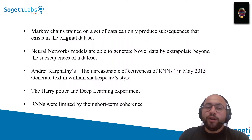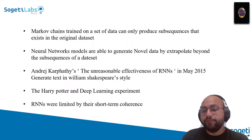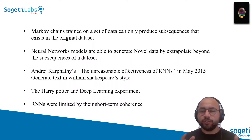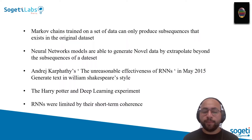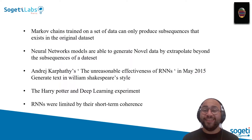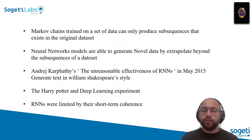But there is a problem with RNNs: they are limited by short-term coherence, which means the memory is short. Imagine a long sequence — a Mozart composition considered in four parts: the first part is happy, the second is a solo, the third is a melody, the fourth is sad. When the model is learning the melody part, it has already forgotten the first happy part. We are not capable of generalizing over long sequences. This is because of a problem called vanishing gradient descent.